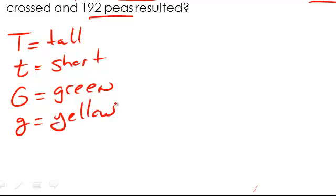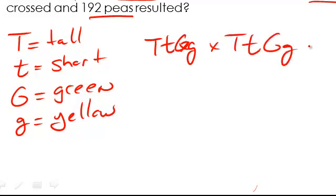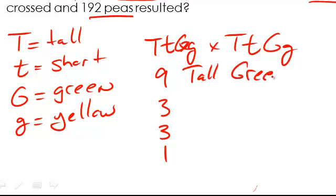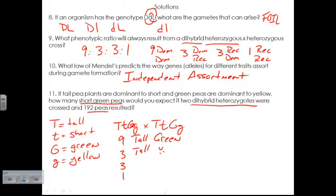So first of all, let's make our key. T is tall and that's dominant to short, and we have green dominant to yellow. And our cross is two dihybrid heterozygotes, so big T little t, sorry, big G little g times big T little t big G little g. And what you should recognize is that's going to give you a nine to three to three to one ratio because it's a dihybrid heterozygous problem. The nine will be dominant for both, so tall and green. Three of them will be dominant for the first and recessive for the second, so that's going to be tall and yellow. And then the next three is going to be recessive for the first and dominant for the second, so that's going to be short and green. And then the last, just the one, the singleton here is going to be recessive for both, so that's going to be short and yellow.